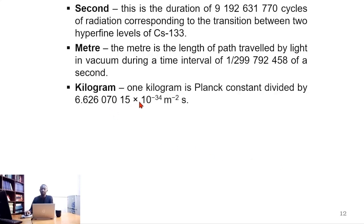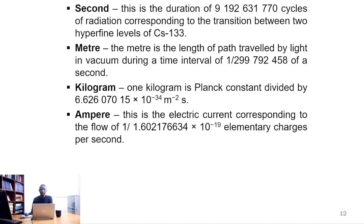The kilogram: one kilogram is Planck's constant divided by 6.62070×10⁻³⁴ per meter squared second. Ampere: the electric current corresponding to the flow of 1/1.602176634×10⁻¹⁹ elementary charges per second.